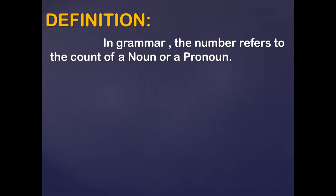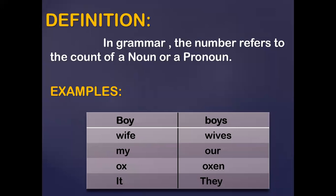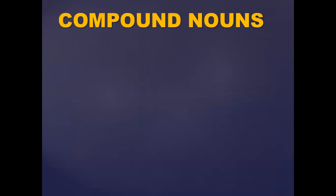Numbers in grammar mean it could be singular or it could be plural. For example, 'wife' is singular and 'wives' is plural. 'My' stands for one and 'our' stands for more than one. Another example: 'ox' becomes 'oxen', and 'it' becomes 'they'. Today we will learn how to convert compound nouns in numbers.